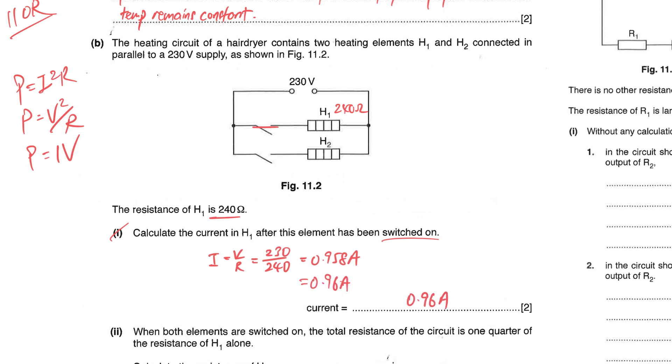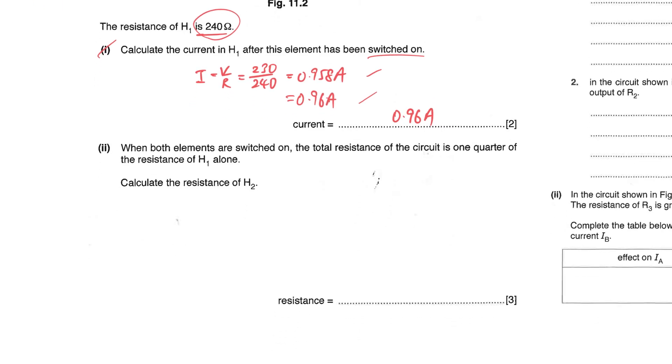We can round off to two sig figs 0.96 ampere. But in general because all these values here can be considered two or three sig figs, you can leave the answer in two sig figs or three sig figs, it should be fine.